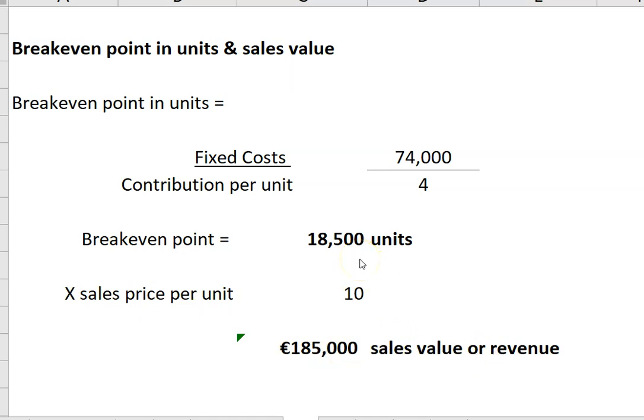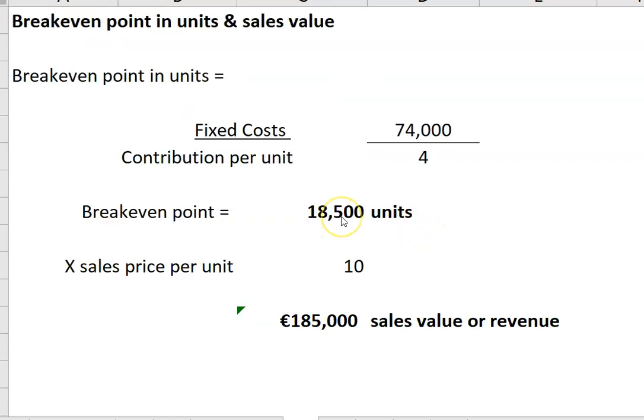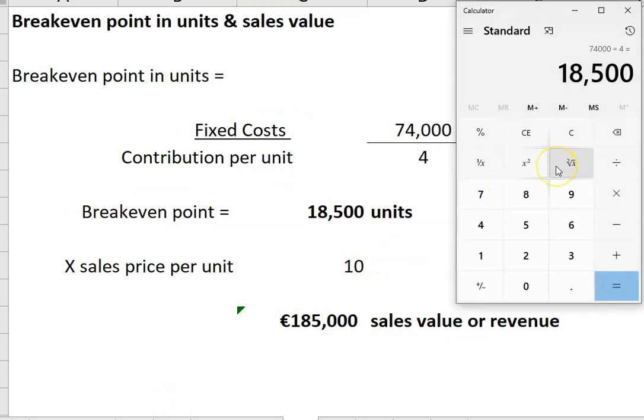It's important for the graph to have calculated both the breakeven point in units and the breakeven point in sales value. It'll always be that formula, then multiply by the sales price. You can always do a quick check that your breakeven point is right. 18,500 units multiplied by 4 euro contribution gives 74,000 contribution, which covers fixed costs to leave zero profit.